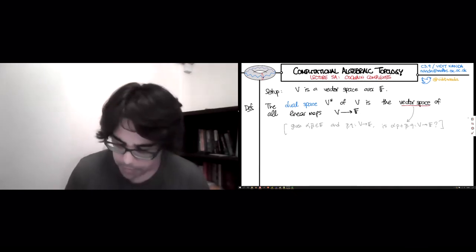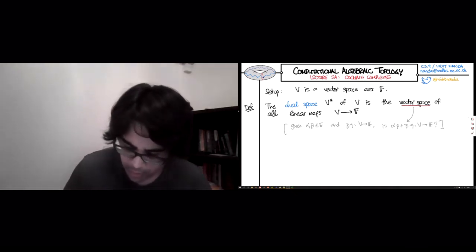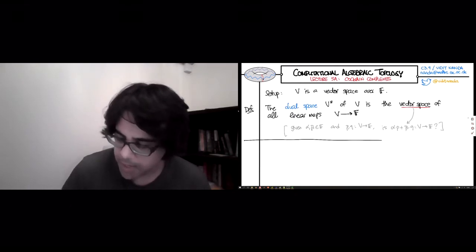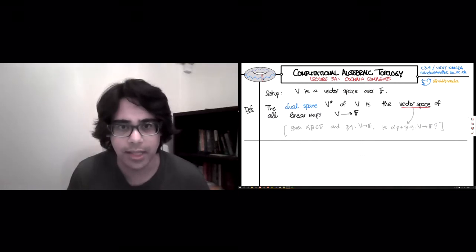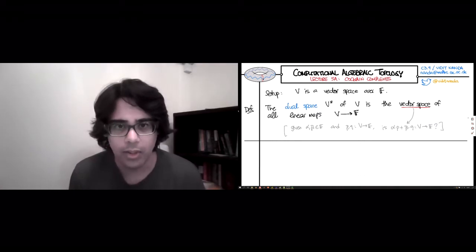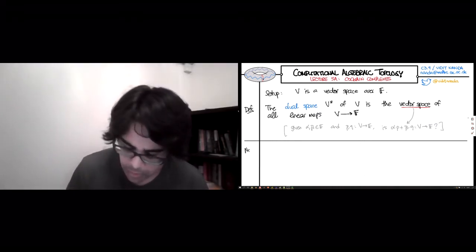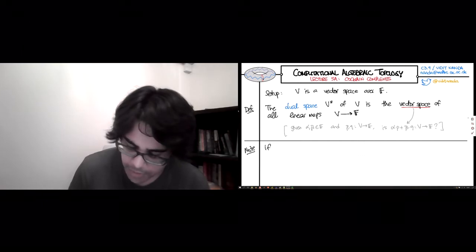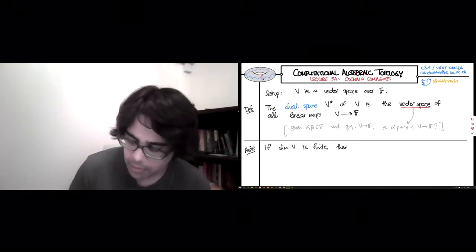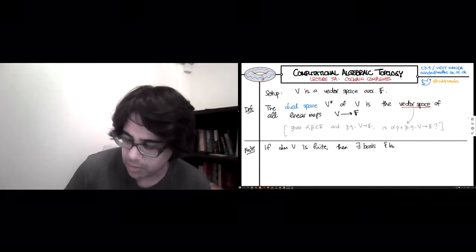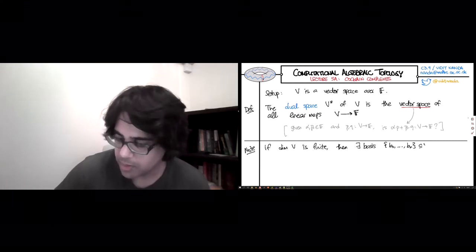Now, given the dual vector space, you can make things about it fairly precise. As it stands, it might look slightly more complicated than V itself. If the dimension of V is finite, then we have some nice basis, maybe B0 through Bn.